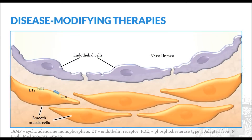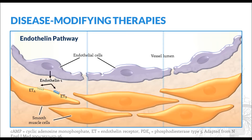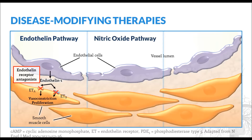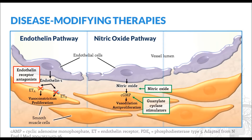The disease-modifying therapies work on one of three major pathways. The first is the endothelin pathway. Patients with PAH have excess circulating concentrations of endothelin-1, which leads to vasoconstriction and smooth muscle proliferation. Endothelin receptor antagonists, such as bosentan, inhibit endothelin receptors to prevent this process. In the second pathway, nitric oxide acts as one of the body's physiologic vasodilators, and it also has antiproliferative effects. It acts via increased cyclic GMP concentrations. Exogenous nitric oxide may be administered to enhance this pathway, although this is primarily reserved for acutely ill patients. The guanylate cyclase stimulator, riociguat, may also be used to increase cyclic GMP production to enhance this pathway.